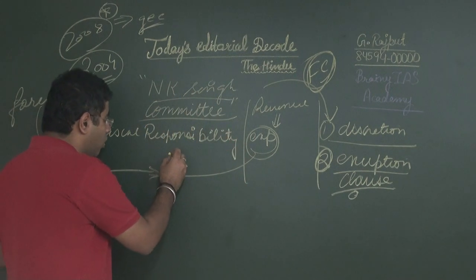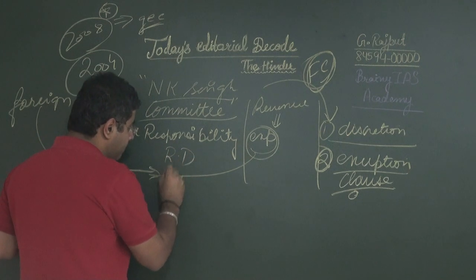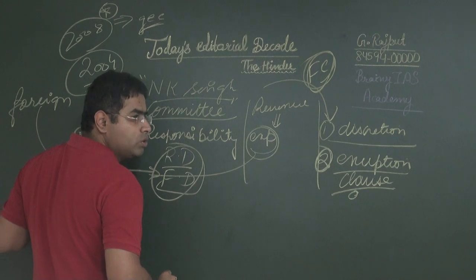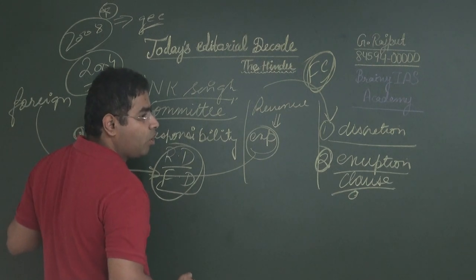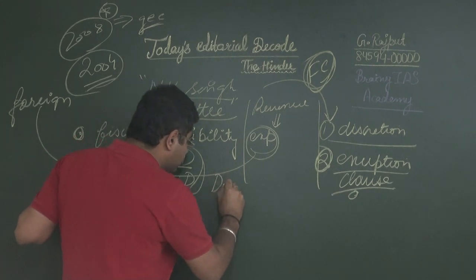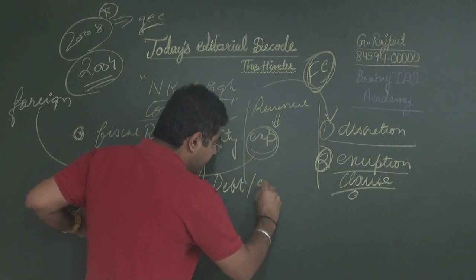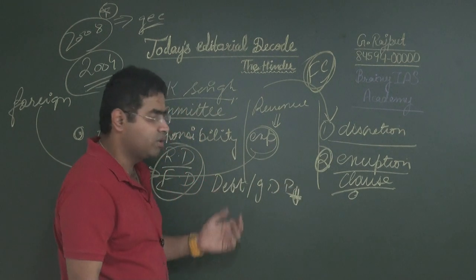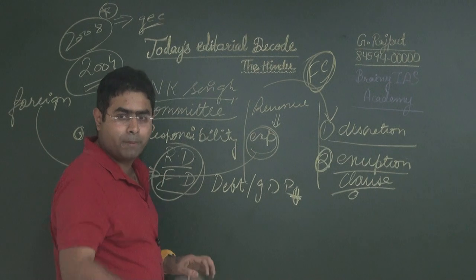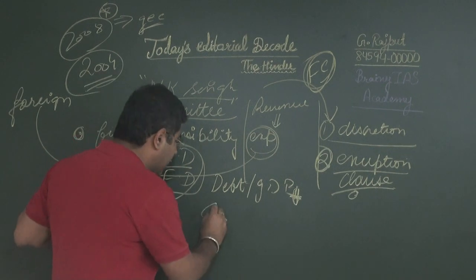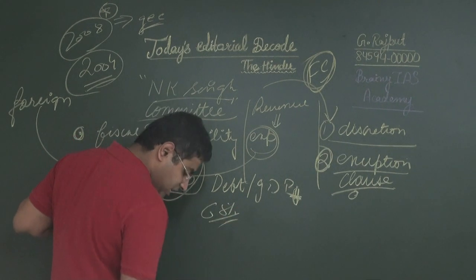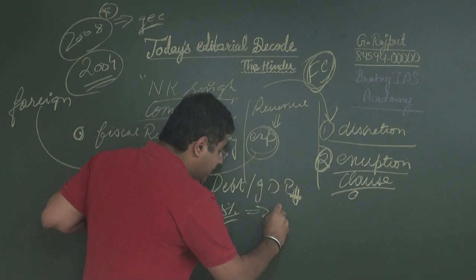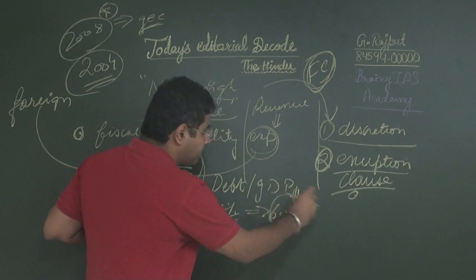The NK Singh Committee also suggested another important thing: apart from focusing on revenue deficit and fiscal deficit, the government should also focus on reducing the debt-to-GDP ratio. Presently the debt-to-GDP ratio is in the range of 68%, and it needs to be reduced to 60%.